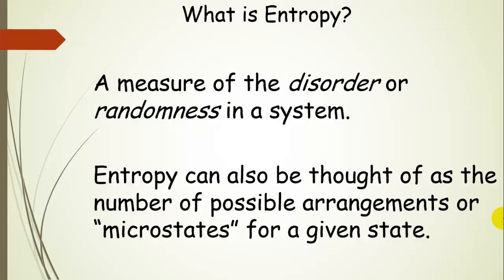What is entropy? Entropy can be kind of hard to understand. Basically, it's a measure of the disorder or randomness found in a system — perhaps the number of possible states or possible arrangements. We call these microstates for some given state, and in the second video in this series we'll do an example demonstrating how that works.